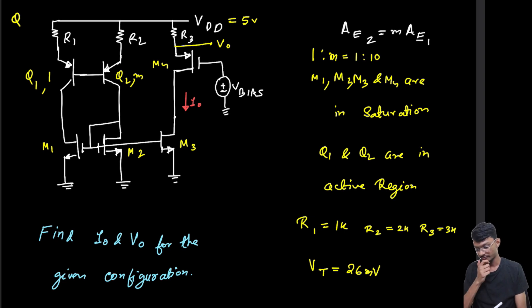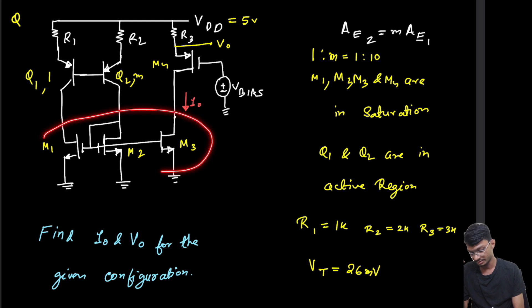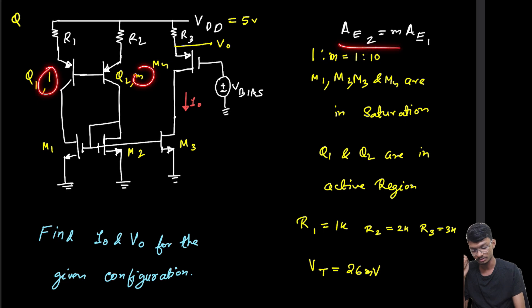Hello everyone. We have been given this question in which we have three MOSFETs M1, M2, and M3, and two BJTs Q1 and Q2. The areas of the emitters of the BJTs are in ratio 1 is to m, where the m value is given as 10.